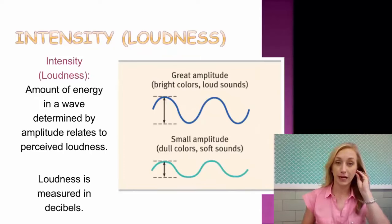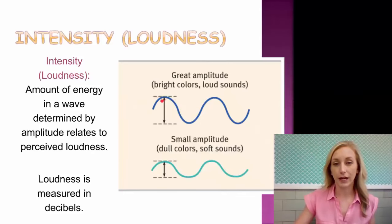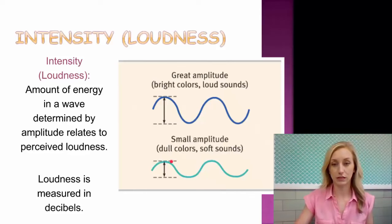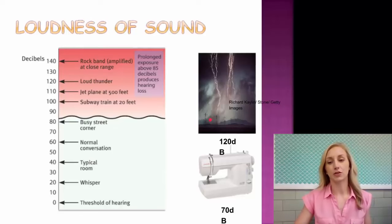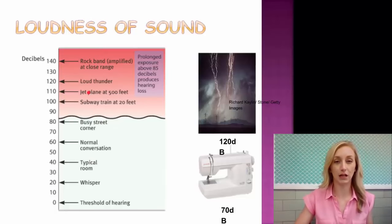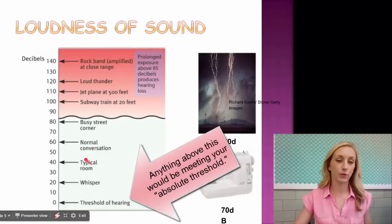The intensity of a sound wave is its loudness. The loudness of a wave is determined by the wave's amplitude, which is the height — from the peak of the wave to the bottom. The amount of energy in a wave is determined by amplitude, and that relates to perceived loudness, which is measured in decibels. A sewing machine is about 70 decibels, a busy street is 80, a lightning strike or thunder is 120 decibels, and a rock band at close range or a jet plane at 500 feet can reach 140 decibels. Prolonged exposure to 85 decibels or above produces hearing loss. Zero decibels is the threshold of hearing, and a whisper is about 20 decibels.